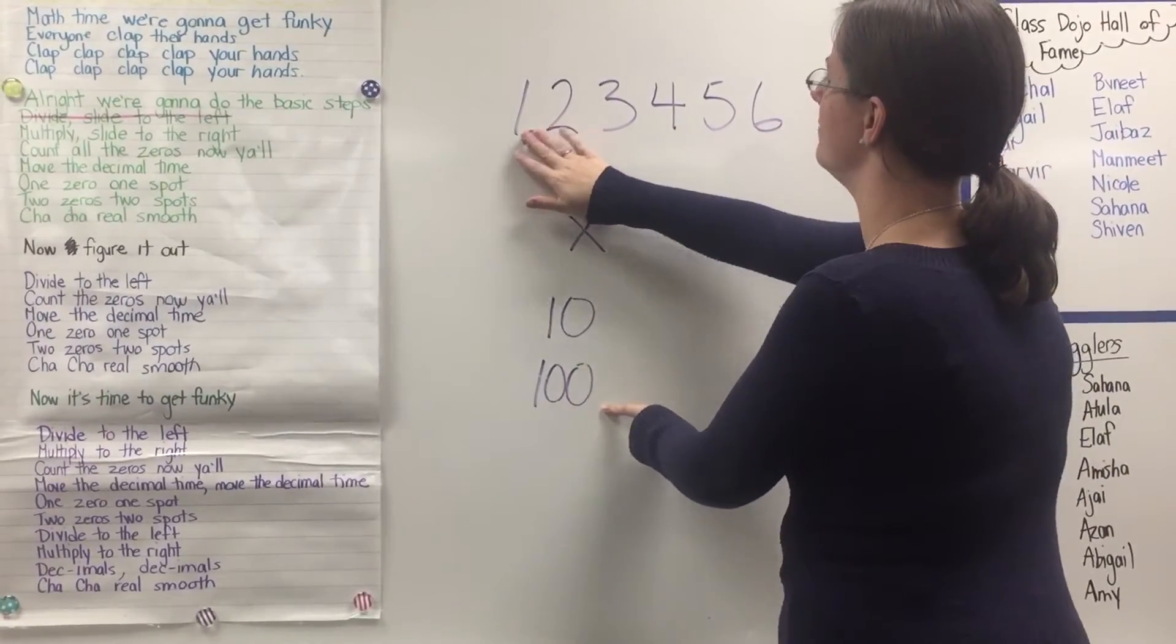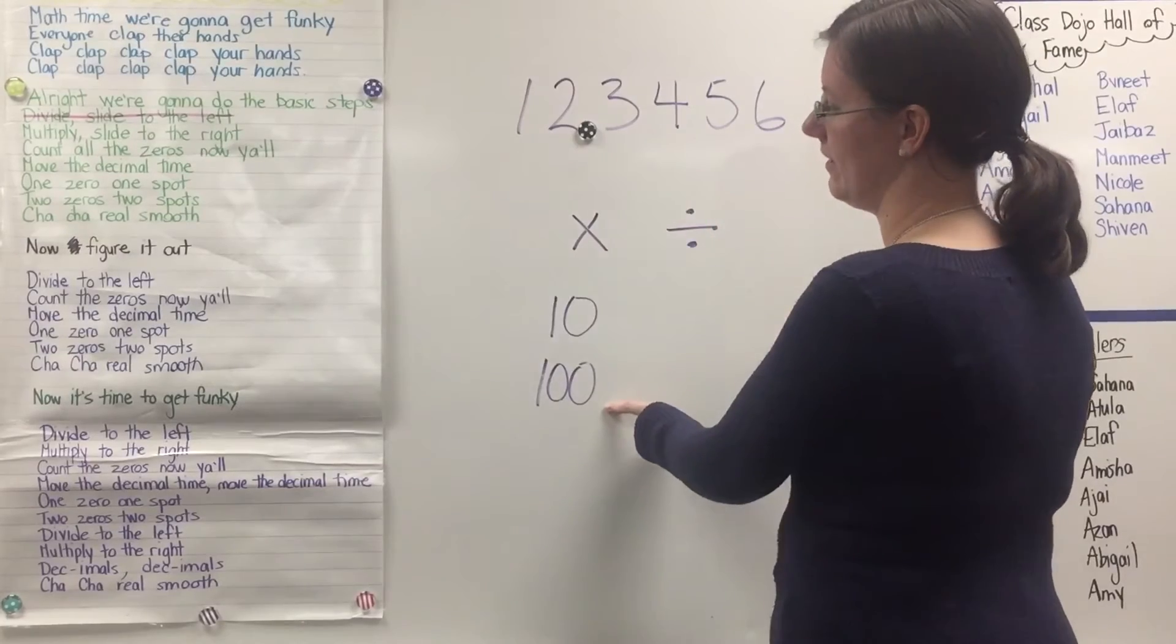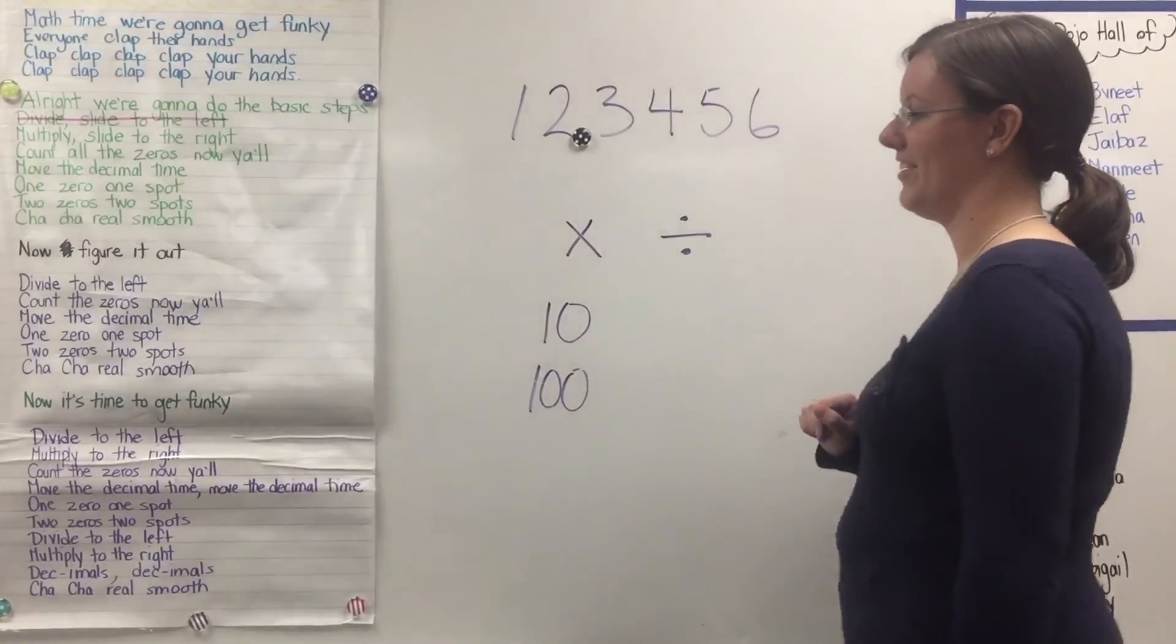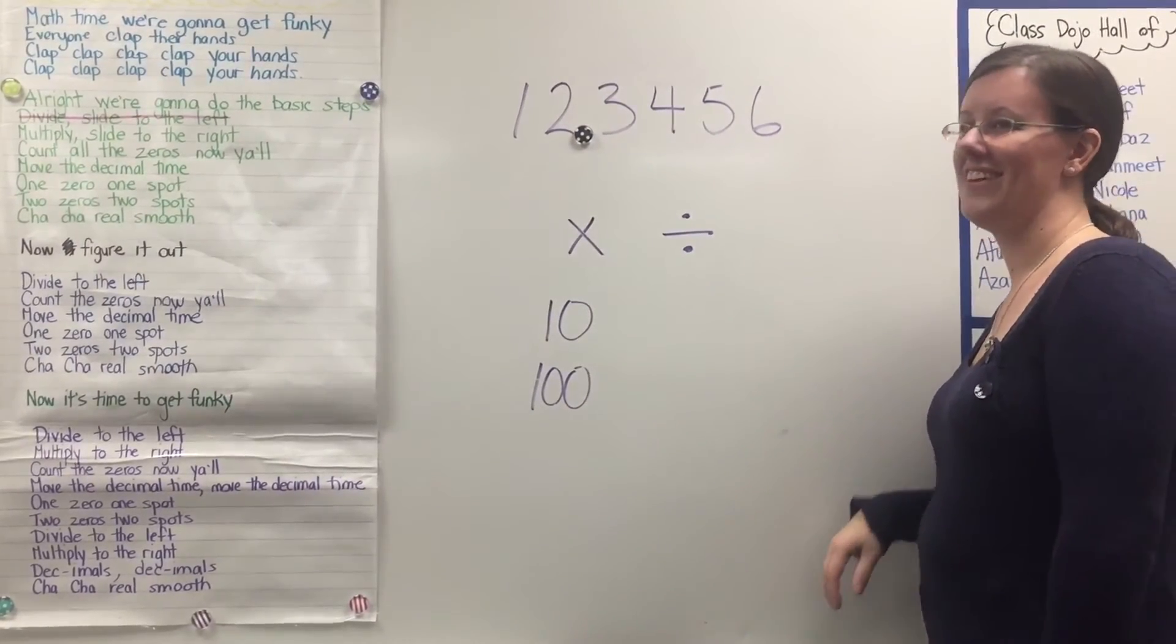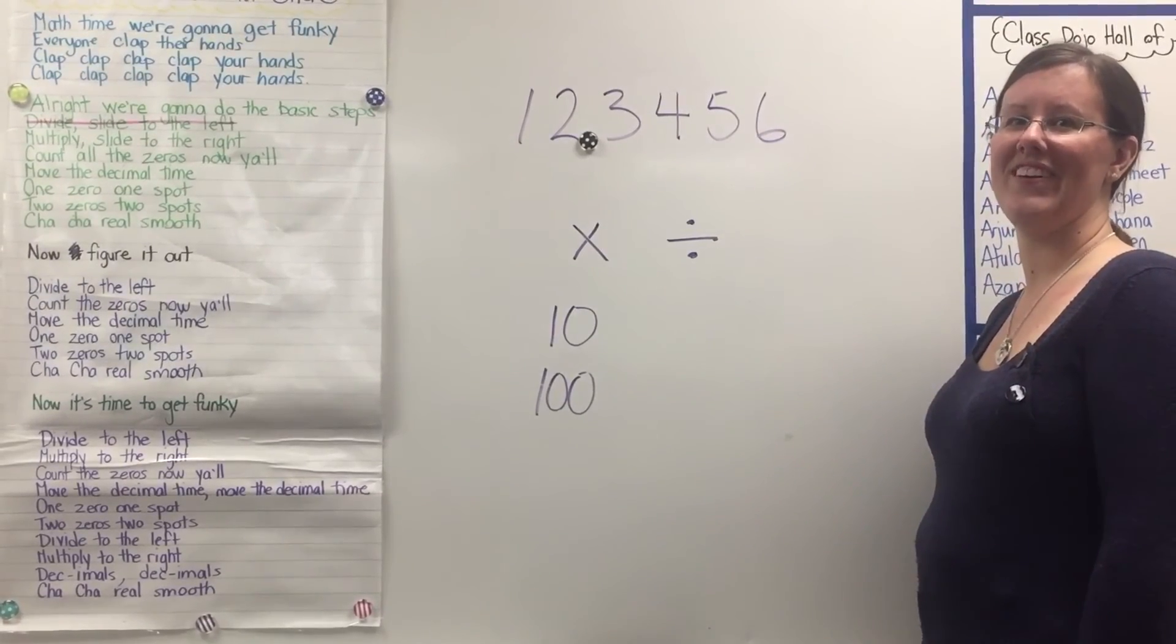Divide to the left. Multiply to the right. Decimals. Cha Cha real smooth. On the left, six, two, seven. Thank you.